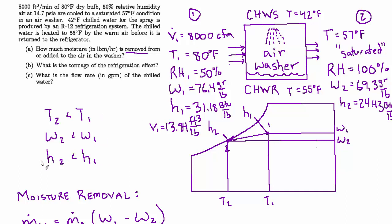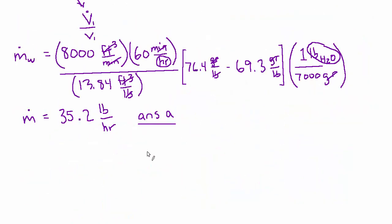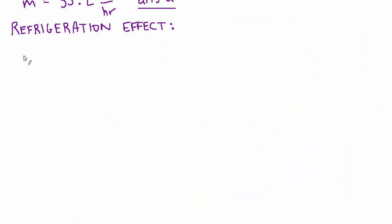The net cooling is captured by the change in enthalpy. So we're going to do a very similar calculation, but instead of using delta omega, we're going to use delta H. So let's set that up for the refrigeration effect. Now the formula we'll use will be Q dot, and this is Q dot total, because like we said, it includes sensible and latent. It's going to be based on delta H, which is the mass flow rate of air times h1 minus h2.